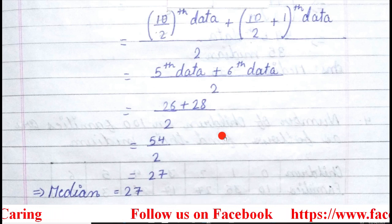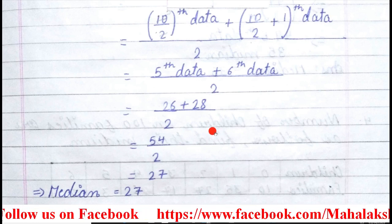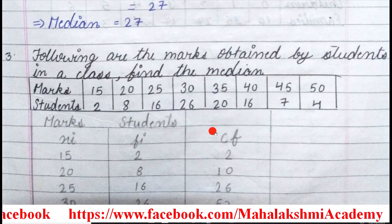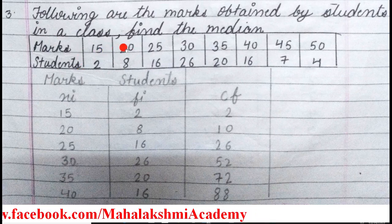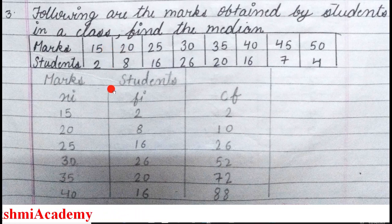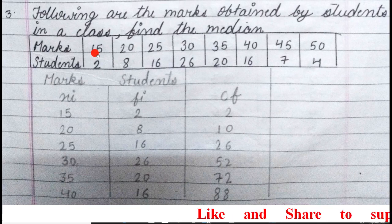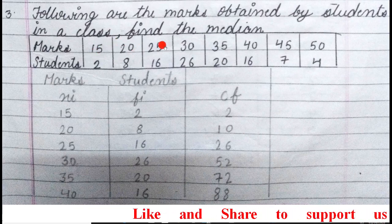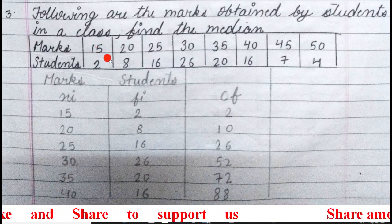In question number 1, the number of data are even, and in question number 2, the number of data are odd. So both patterns are completed. Now we will move to the tabular format. Question number 3 is in table format to find out the median. Here the data are ungrouped — ungrouped means not in class intervals. Simply these are the xi values and fi (frequency). These are named as an ungrouped frequency distribution table.